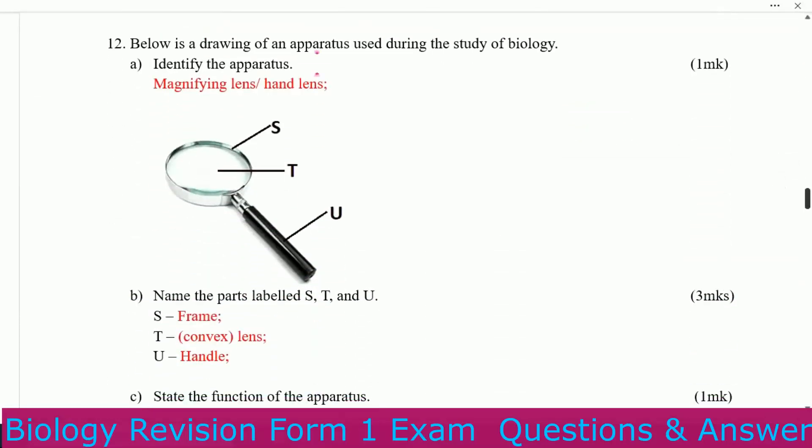There is a drawing of an apparatus used during the study of biology. Identify the apparatus — you can see it has parts S, T, and U. This one is a magnifying lens or hand lens. Name the parts labeled S, T, and U: S is the frame, T is the convex lens, U is the handle.